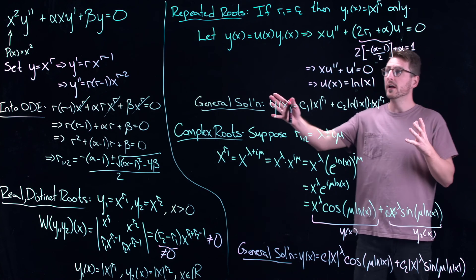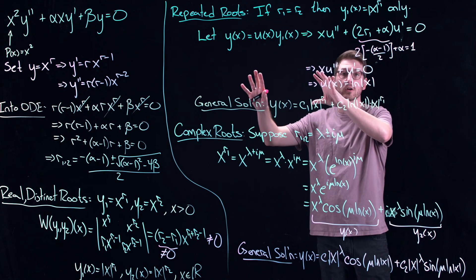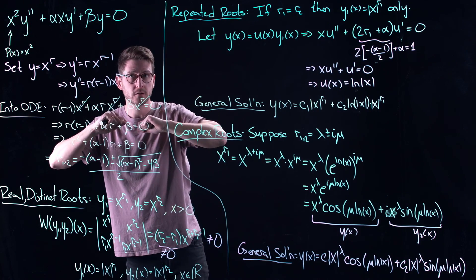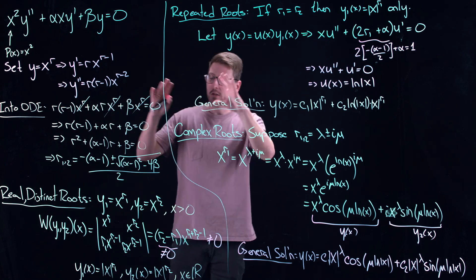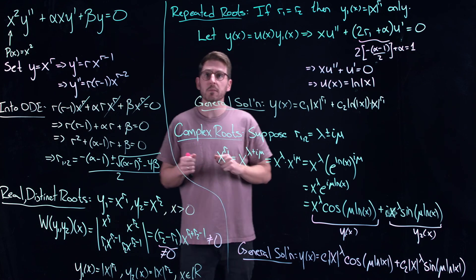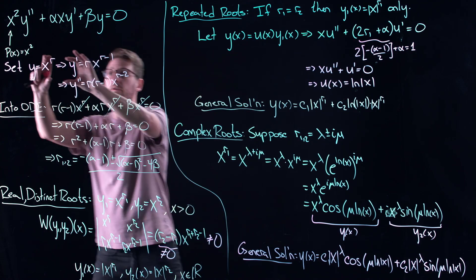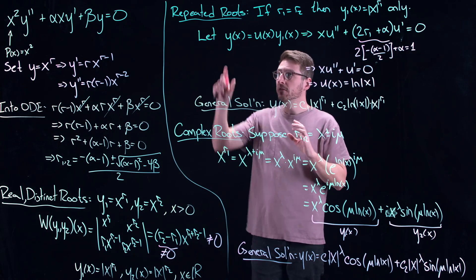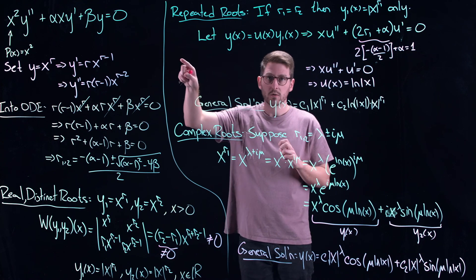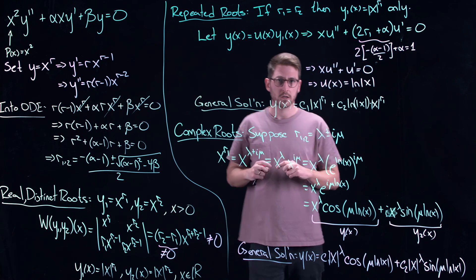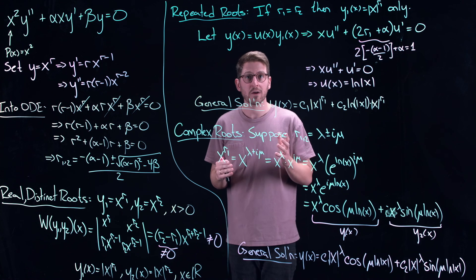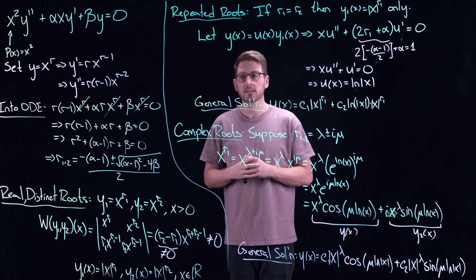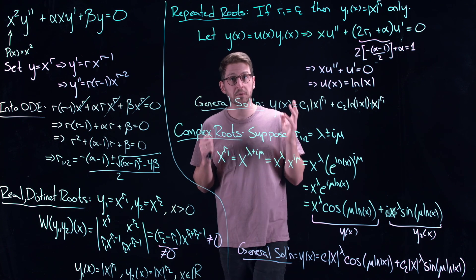In this lecture we walked through how to solve these simple Euler equations: a very specific type of equation solved with a very specific type of solution. A fundamental understanding of Euler equations is very important for tackling series solutions around singular points, which we'll return to in the next lecture where we discuss the Frobenius method.